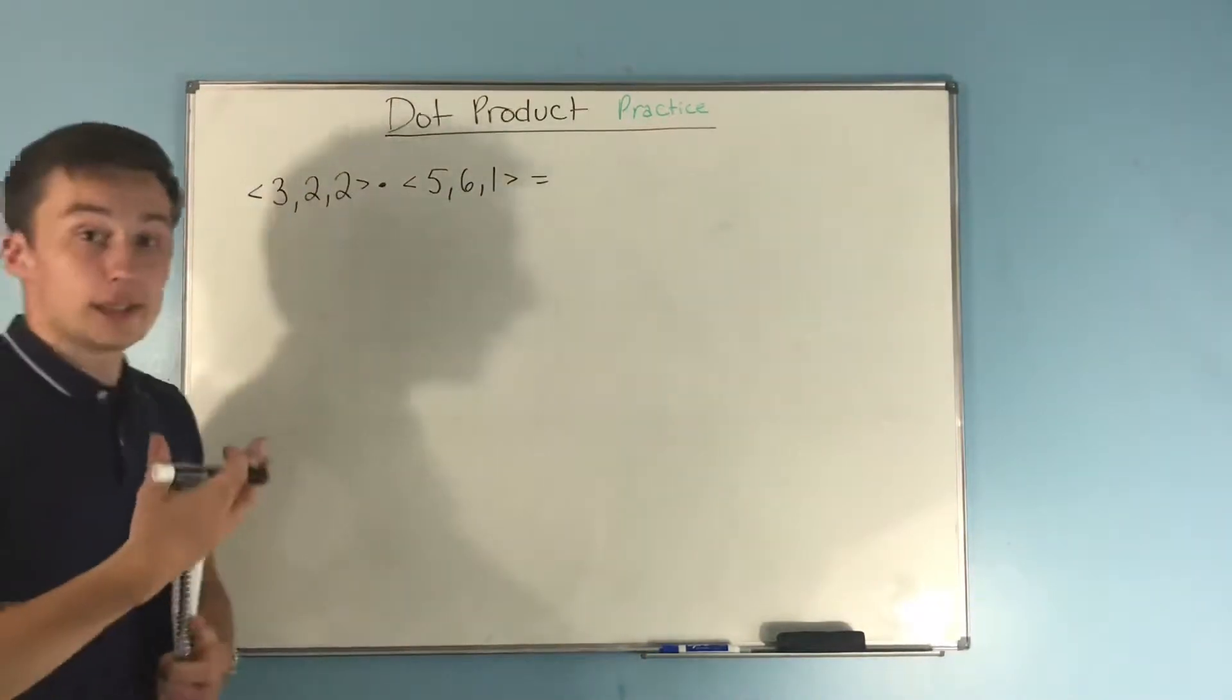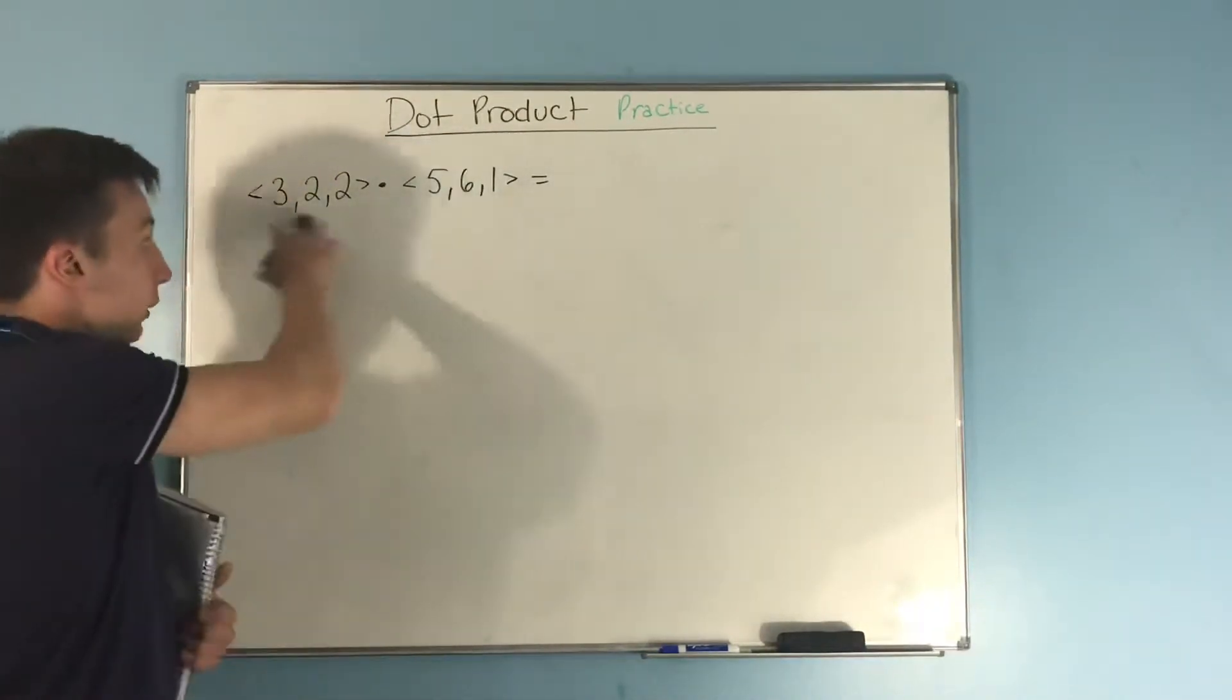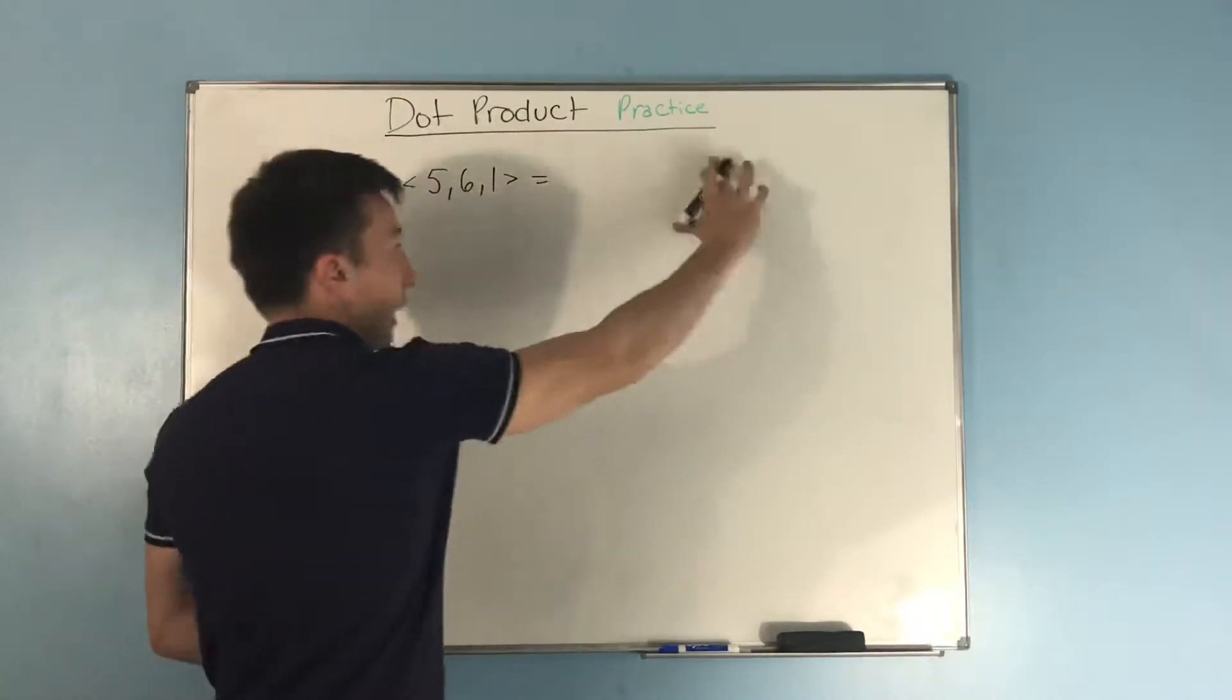This is the symbol for, it just means dot. It's 3, 2, 2, dot 5, 6, 1, and that gives us the dot product.